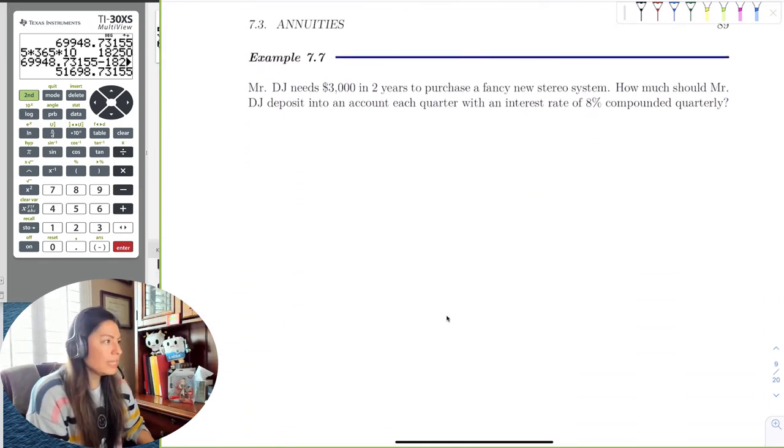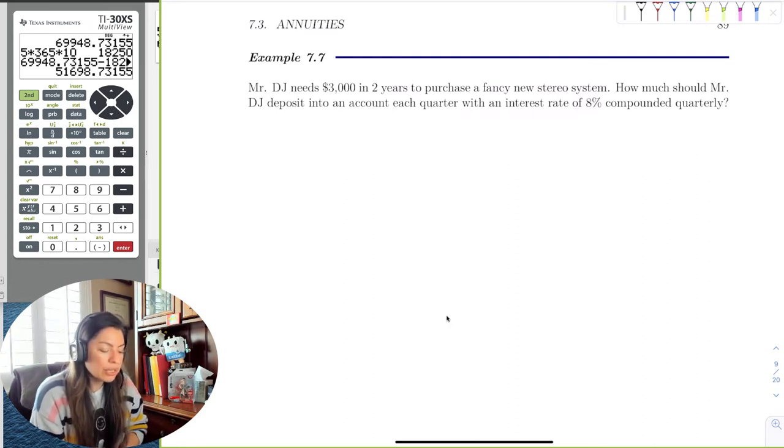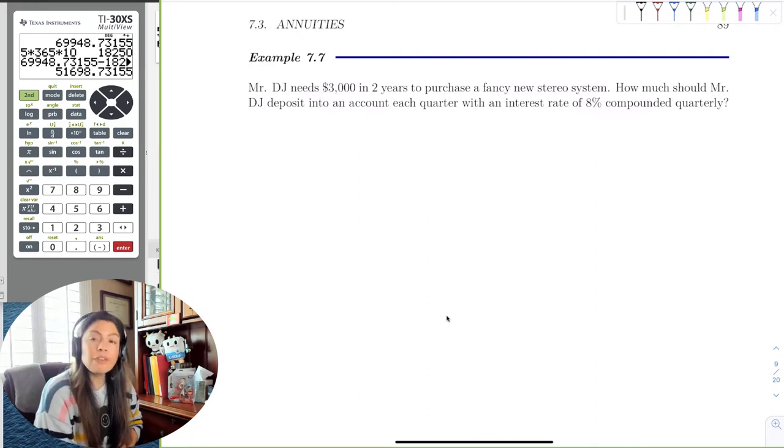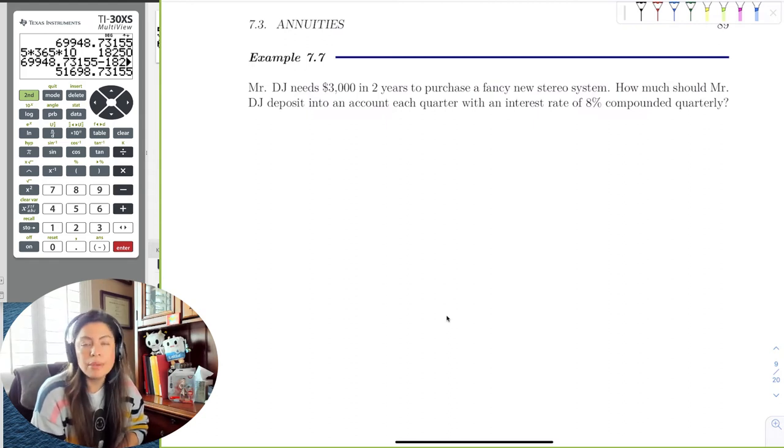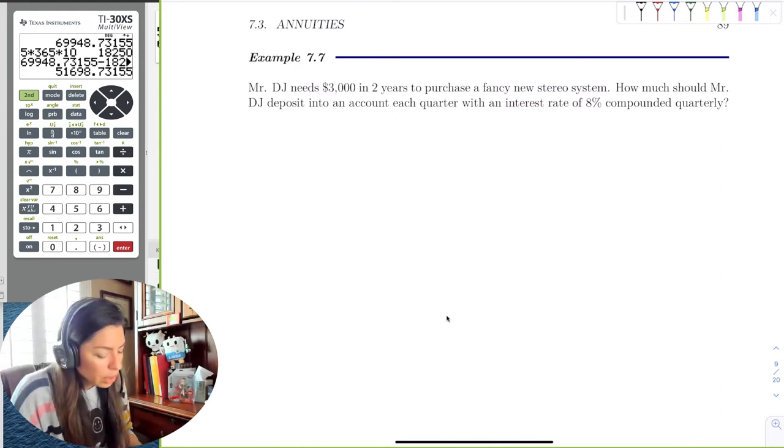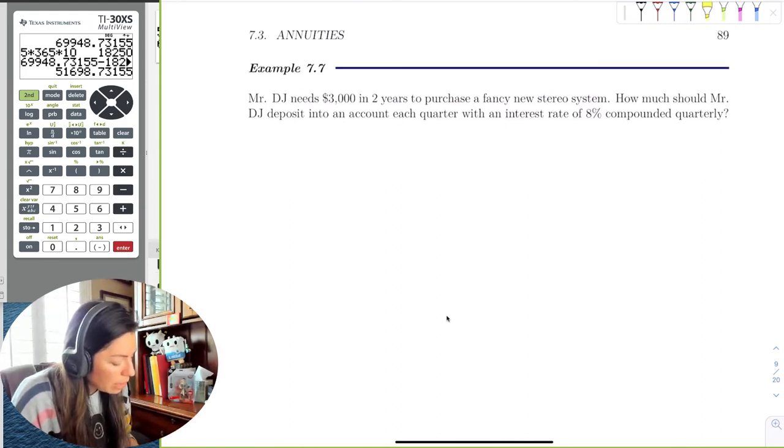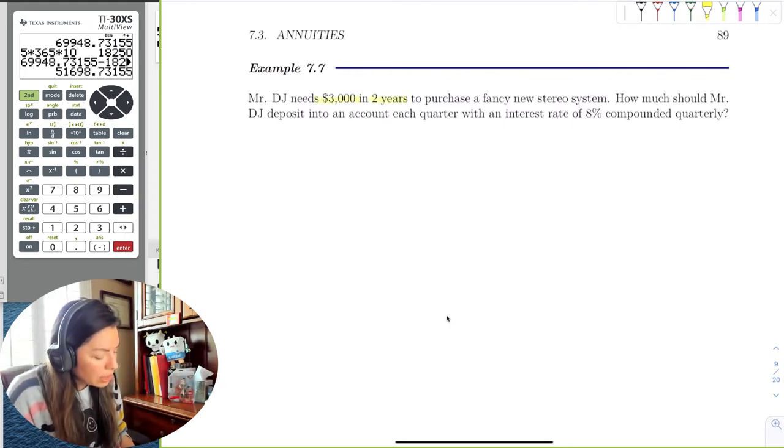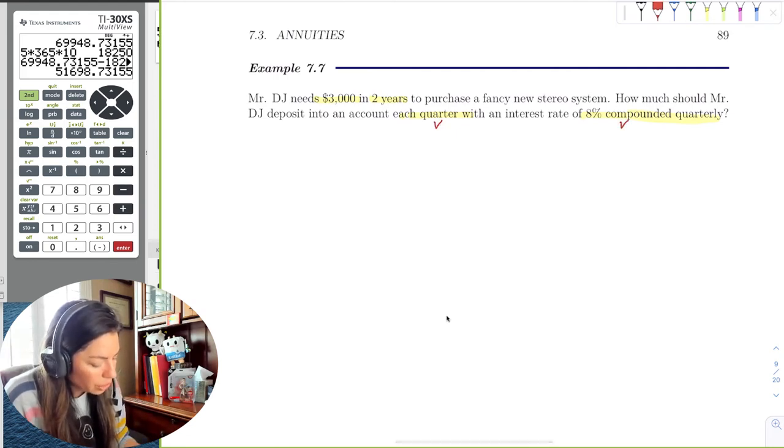So let's try one more example. This example says Mr. DJ needs $3,000 in two years to purchase a fancy new stereo system. How much should Mr. DJ deposit into an account each quarter with an interest rate of 8% compounded quarterly? So notice this is a little different. It's not letting me know how much Mr. DJ is depositing every time period. It's saying I need $3,000 in two years.